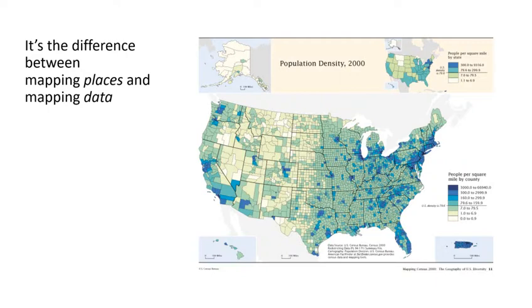A reference map might show us things like bank locations, cities, roads — they're navigational on purpose. But thematic maps might show us average income per county or population density. So it's mapping data versus mapping locations.